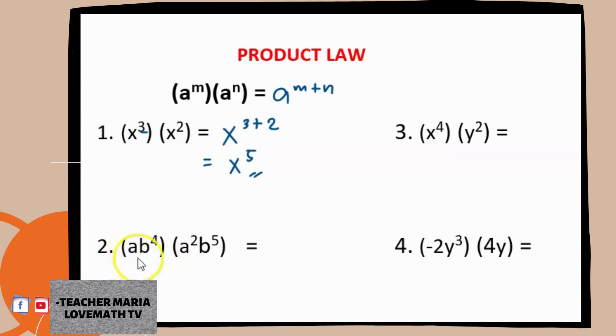Now suppose we have here this one. You will have here the product of ab raised to 4 and then a raised to 2, b raised to 5.